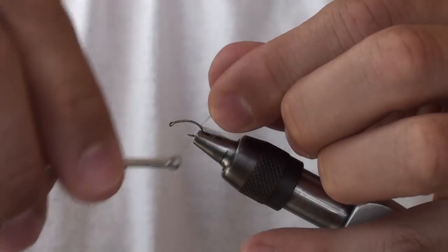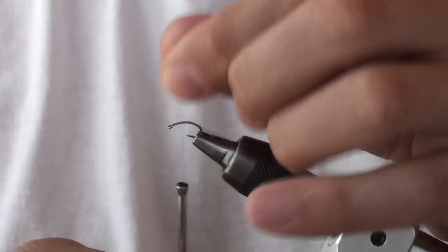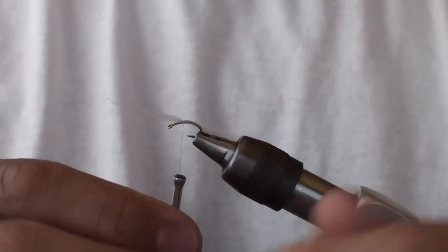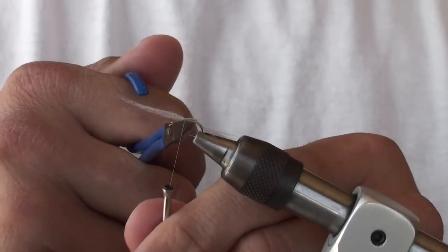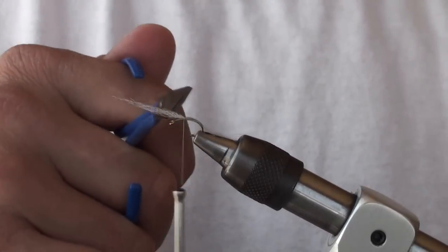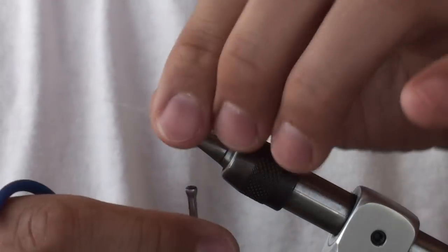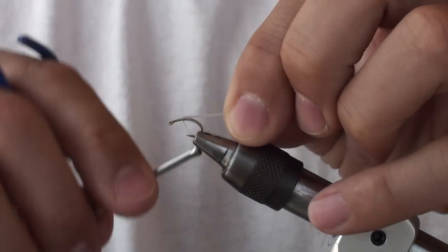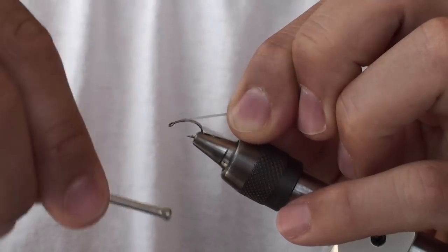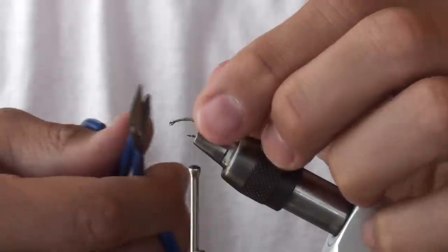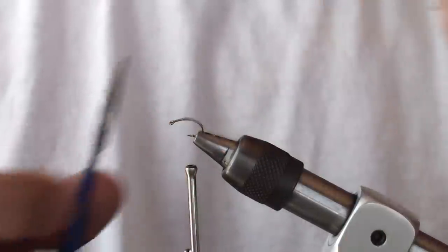Wrap underneath the tailing material, wrap forward to the thorax or where the thorax would be and bind the Antron down. The reason I do that is to add a little bit of bulk to the fly because I want to build a tapered body, thinner in the back, a little bit thicker up towards the front here. I'm going to pull the Antron back towards the tail and bind it down a second time. I'm not going all the way back to the tail, I'm going to go back about midway. Clip off the excess.